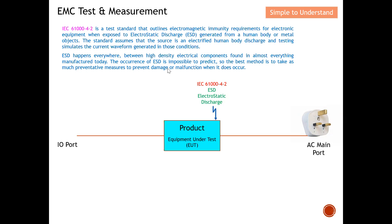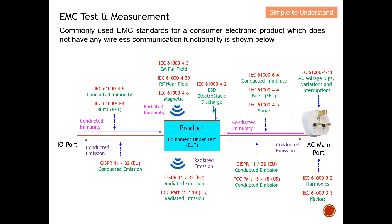ESD occurs everywhere among high-density electrical components found in almost everything manufactured today. The occurrence of ESD is impossible to predict, so the best method is to take prevention measures to minimize damage or malfunction when it does occur. For example, a person's body can produce a spark onto the EUT, causing it to malfunction or reset. We therefore shoot the EUT with an ESD gun to ensure our design is robust.